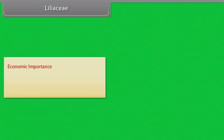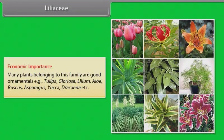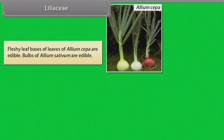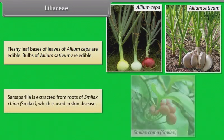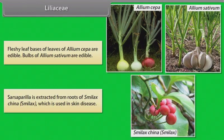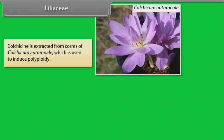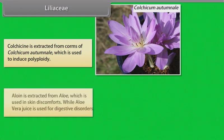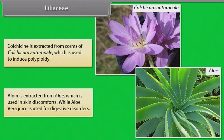Economic importance of Liliaceae: many plants of this family are good ornamentals, for example Tulipa, Gloriosa, Lilium, Aloe, Ruscus, Asparagus, Yucca, and Dracaena. Fleshy leaf bases of Allium cepa (onion) and bulbs of Allium sativum (garlic) are edible. Sarsaparilla is extracted from roots of Smilax china, which is used in skin diseases. Colchicine is extracted from corms of Colchicum autumnale and is used to induce polyploidy. Aloin is extracted from Aloe and is used in skin discomforts, while aloe vera juice is used for digestive disorders.